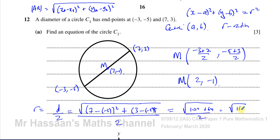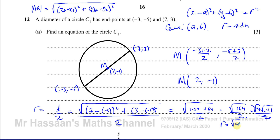We have the square root of 164 divided by 2. Factoring out 4: that's the square root of 4 times 41, divided by 2. The square root of 4 is 2, so the 2s cancel, giving us a radius equal to root 41. So the radius of the circle is root 41.